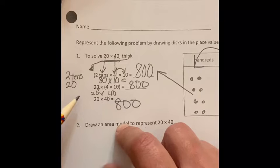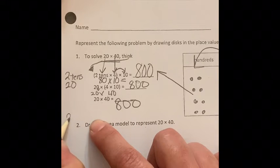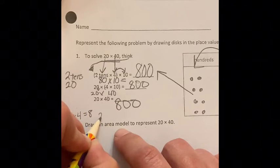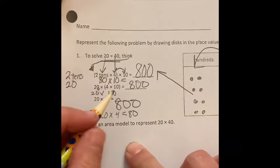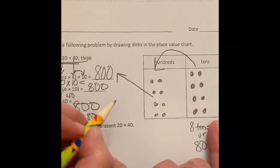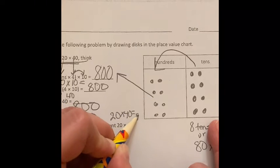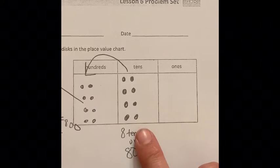20 times 40 is 800. Remember, over here I'm thinking, what is 2 times 4? That's going to be 8. 20 times 4, that's going to be 80. 20 times 40, that's going to be 800. And you can see that on old trusty.